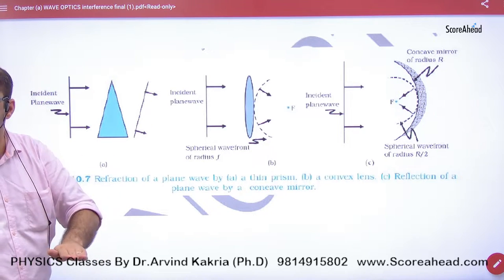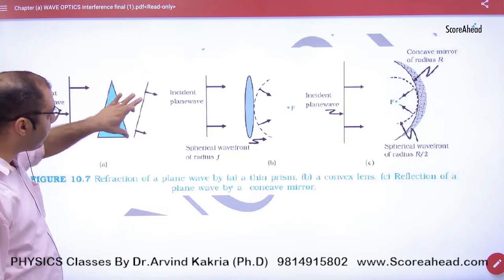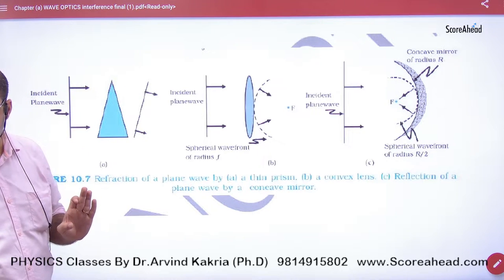So we have to draw a diagram: this is a plane wavefront that bends. Point number one, point number two.